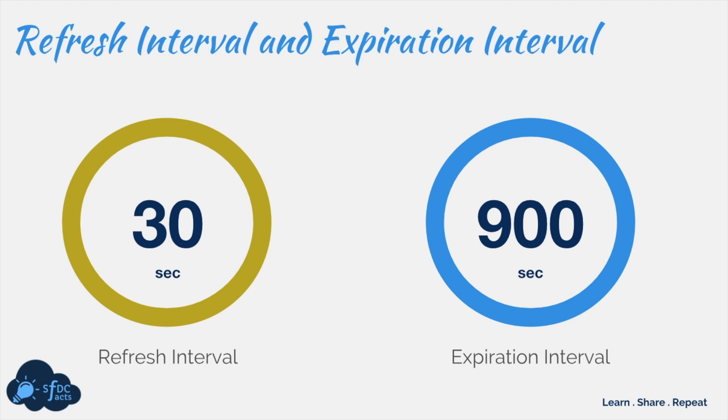When talking about client-side cache, we need to understand two intervals: the refresh interval and the expiration interval. The refresh interval means how long the Lightning framework should consider your data as fresh. For the next 30 seconds after data is stored in browser cache, the framework considers it fresh and will not go to the server again. The expiration interval is 15 minutes — if your data is 15 minutes old in the browser cache, the Lightning platform will completely disregard the cache and make a fresh call to the server.